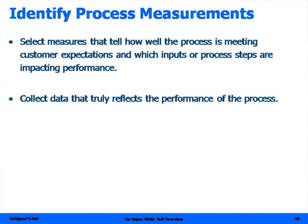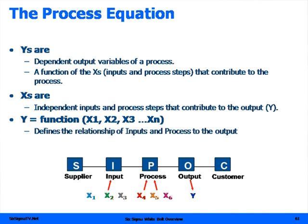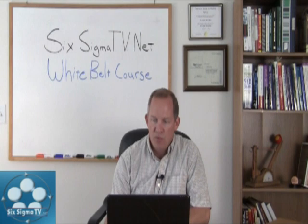Next, we want to identify the process measures — what are the measures that are going to help us understand if we're meeting customers' expectations, and which inputs or process steps are impacting performance? We want to make sure we collect data that truly reflects the performance of the process. Remember, Y's are the outputs, and there are many X's that feed that Y, but only a few X's are what we call critical X's — those that have a lot of leverage on determining the impact on Y. That's why we want to look at all those X's and determine which ones will result in the greatest change if we improve or monitor them.